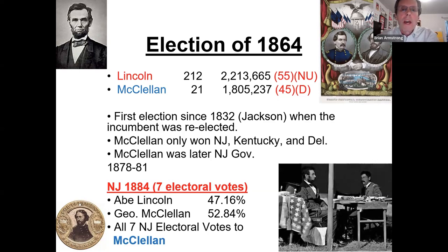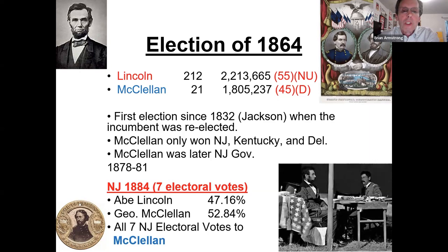Andrew Johnson becomes president after Lincoln's assassination. But before that, Andrew Johnson showed up at Lincoln's second-term inauguration very drunk, hardly able to sit up. Hannibal Hamlin and someone else had to basically carry him in to swear in the senators, but Johnson fell asleep and couldn't do it, so someone else had to. That was the country's introduction to Andrew Johnson.